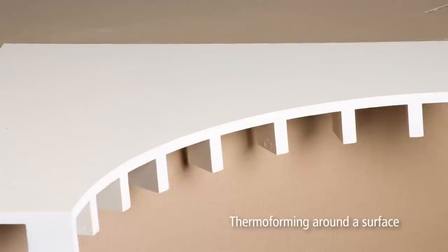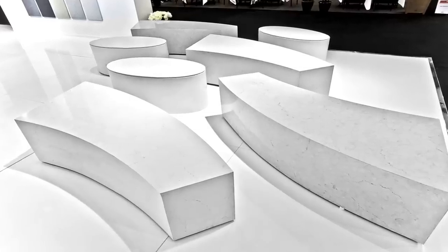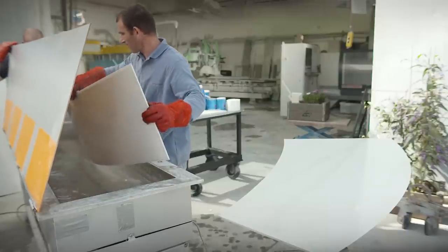Now we'll show you the thermoforming around a surface technique, which is used to create coffee tables like this one. Take the heated flexible Caesarstone out of the tank and lay it on a flat surface.